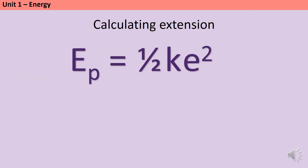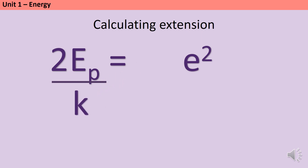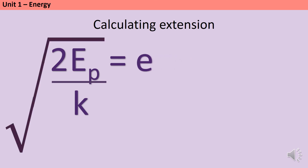Finally, we calculate extension — probably the most challenging rearrangement. Start the same way: multiply everything by two to remove the half, giving 2E = ke². Then divide both sides by k to get 2E/k = e². To go from e² to e, take the square root of both sides, so e = √(2E/k). The important thing is that the square root applies to everything — work out 2 × E first, divide by k, then take the square root of that result. Don't try to build a fraction with square root all at once or something will go wrong.